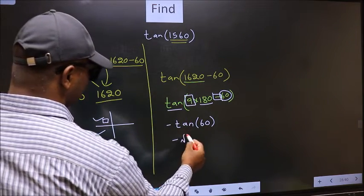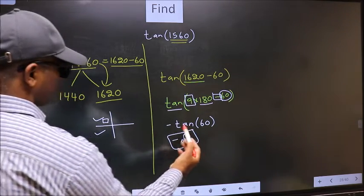So negative tan 60 is root 3. This is our answer.